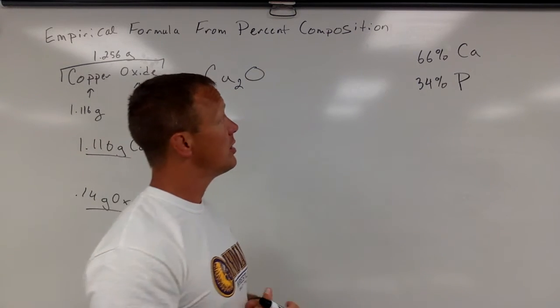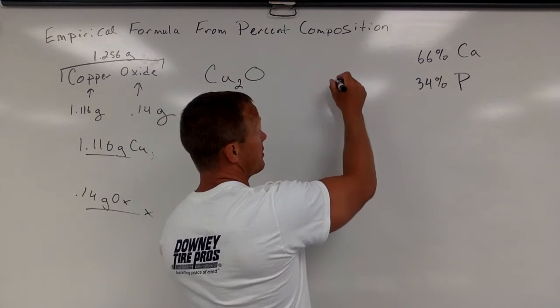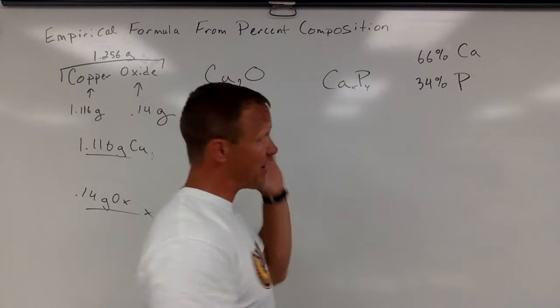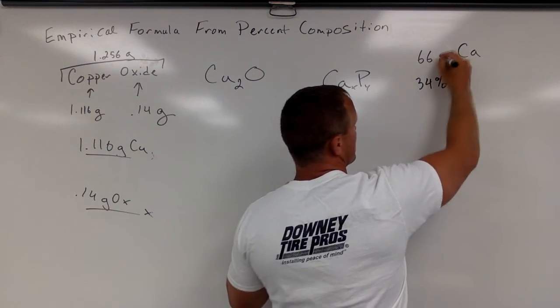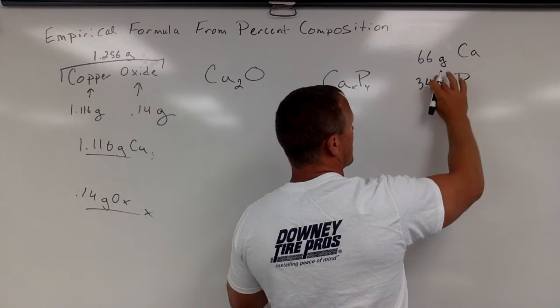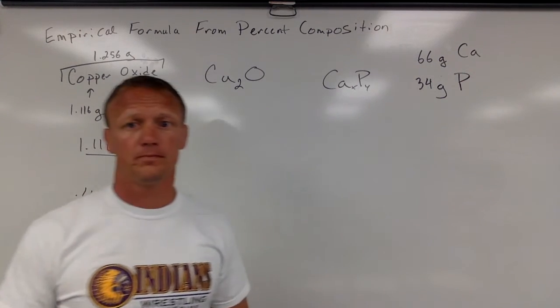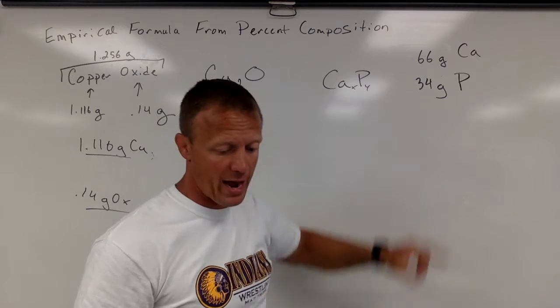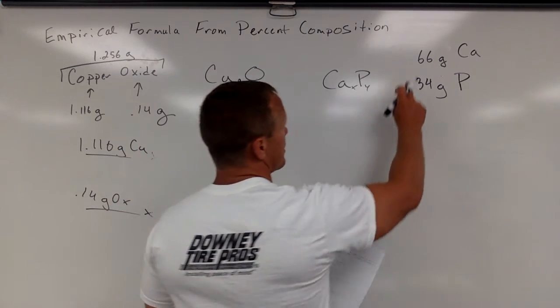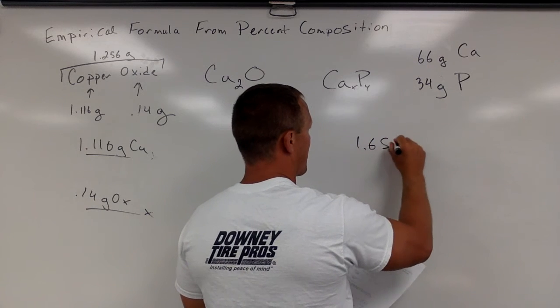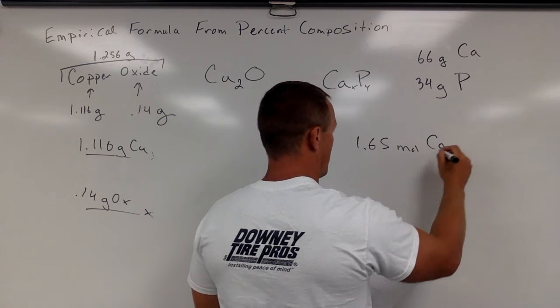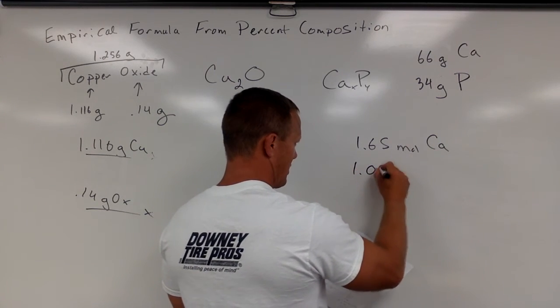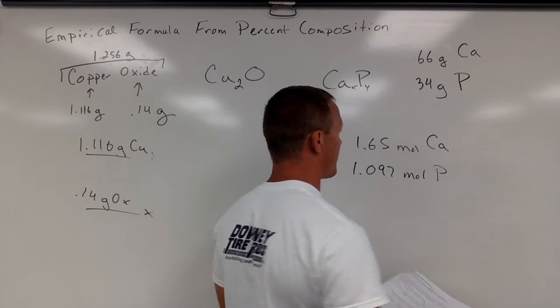All we need to know is what the ratio is. So if we said we have 100 grams of calcium phosphide, we're trying to figure out what numbers go there. If we have 100 grams of that compound, that means we'd have 66 grams of calcium and 34 grams of phosphorus. Again, we need to turn this into moles, turn that into moles. So divide by the molar masses. 66 divided by 40 is 1.65 moles of calcium, and 34 divided by 31 is 1.097 moles of phosphorus.